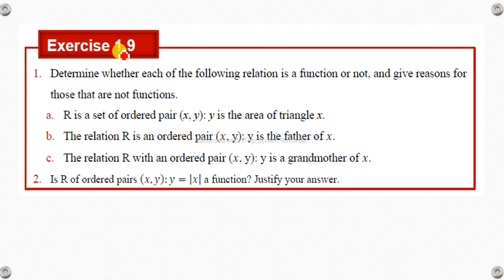Exercise 1.9: Determine whether each of the following relations is a function or not, and give reasons for those that are not functions. A: R is a set of ordered pairs (x, y) where y is the area of triangle x.